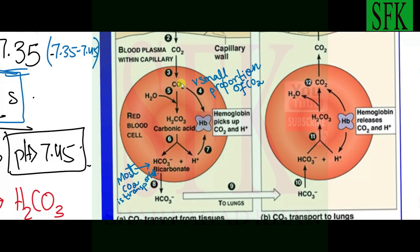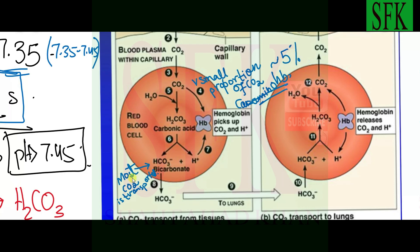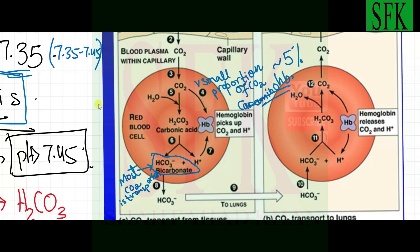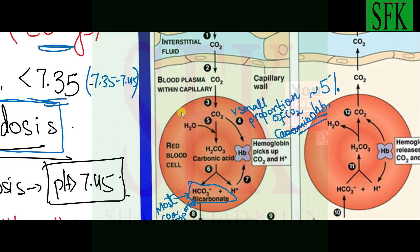A small proportion of carbon dioxide also directly combines with hemoglobin inside the red blood cells to form carbaminohemoglobin, which is then transported to the lungs where it releases its CO2. However, carbaminohemoglobin accounts for only about five percent of carbon dioxide transport, while the major transportation occurs in the bicarbonate form.